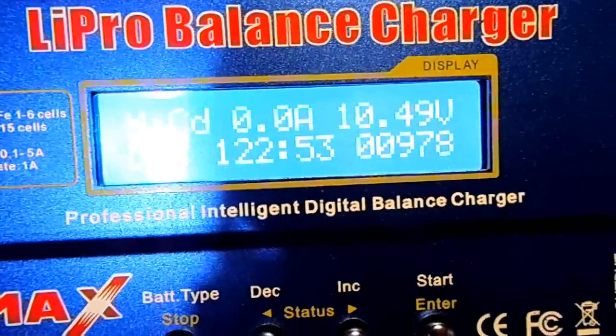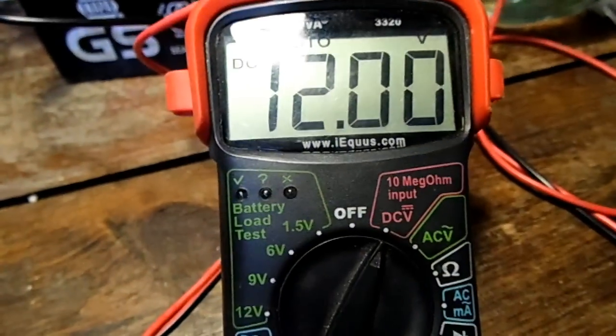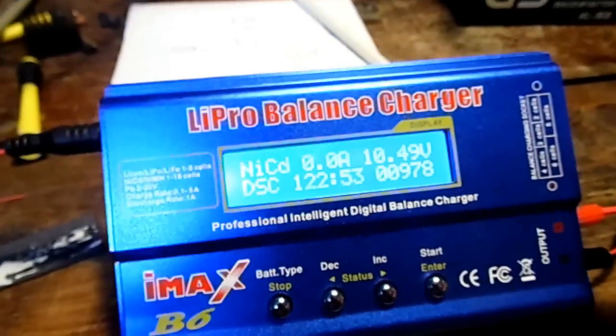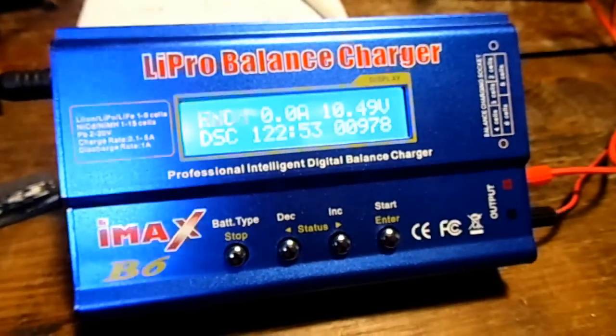Well now on this run I got 978 milliamp hours of current. That is amazing and it went up to 12 volts. Perhaps this takes several cycles to work. I've heard that before, so let's charge it and do another cycle.